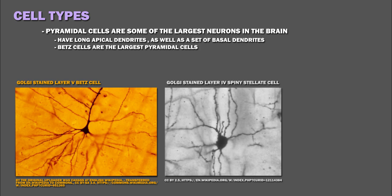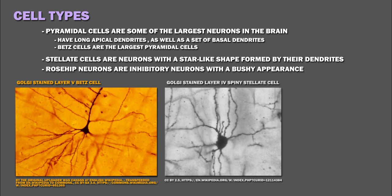Betz cells are the largest pyramidal cells. Stellate cells are neurons with a star-like shape formed by their dendrites. Rosehip neurons are inhibitory neurons with a bushy appearance.